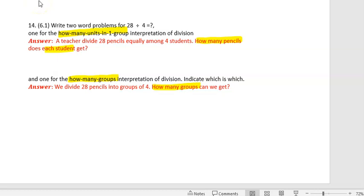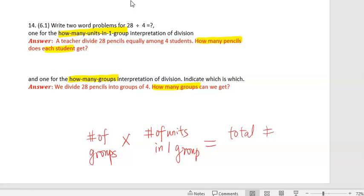By the definition of multiplication, the first number means the number of groups. In multiplication, we have number of groups times number of units in one group, which equals the total number of units in these many groups.